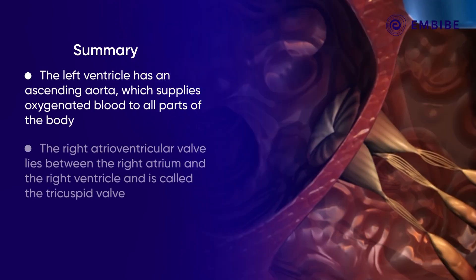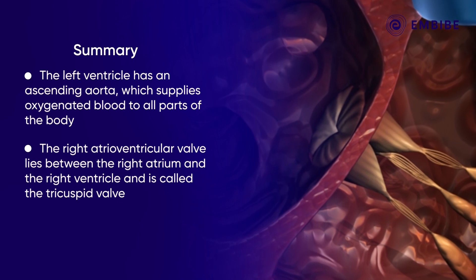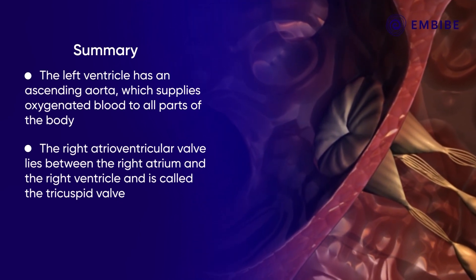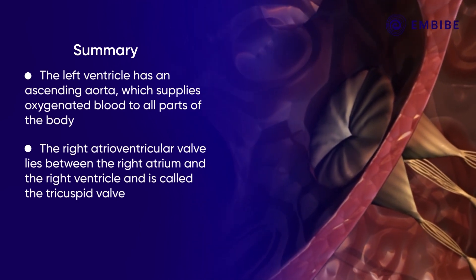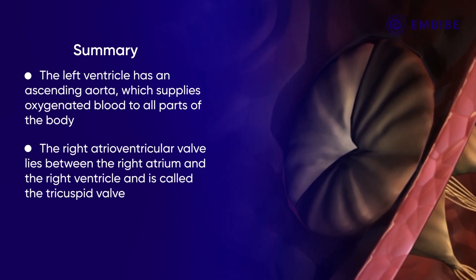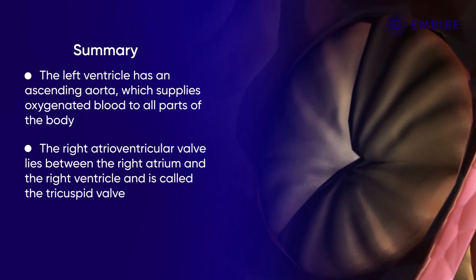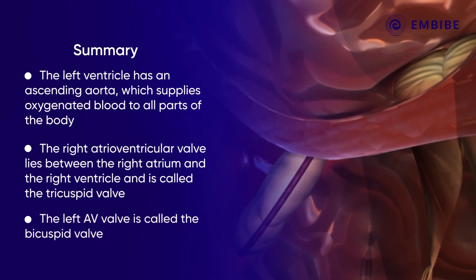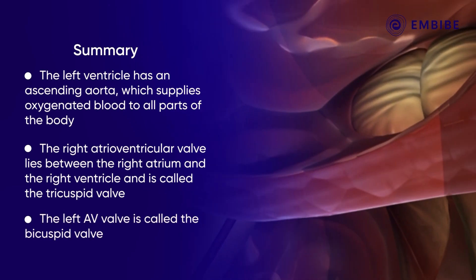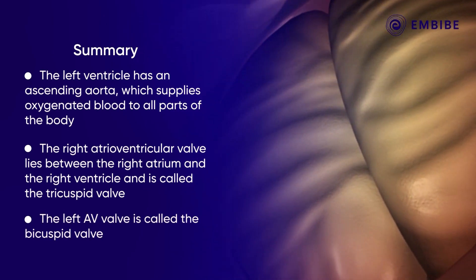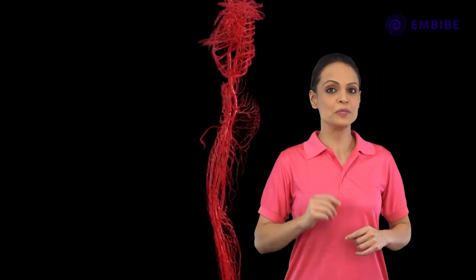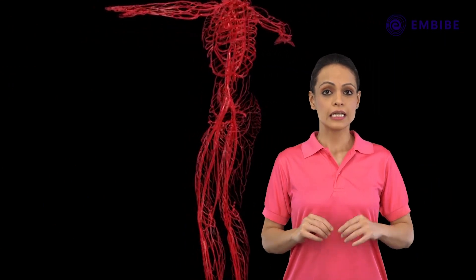The right atrioventricular valve lies between the right atrium and the right ventricle; it is called the tricuspid valve. The left AV valve is called the bicuspid valve. That was all about the human heart.